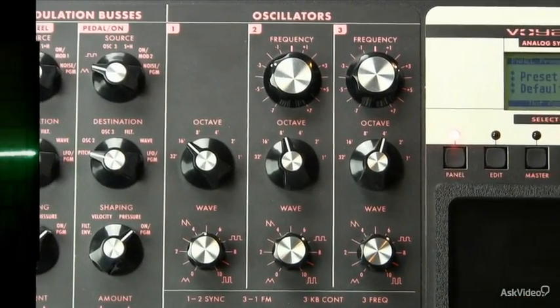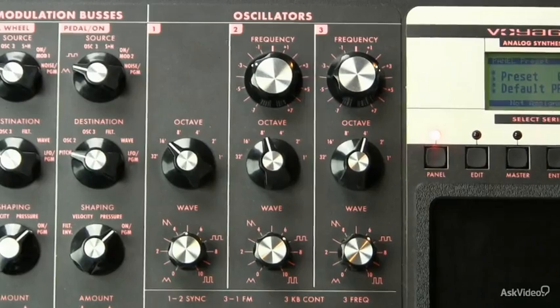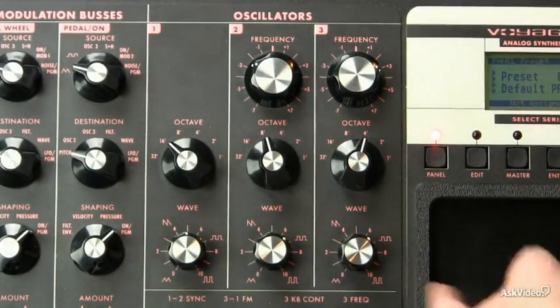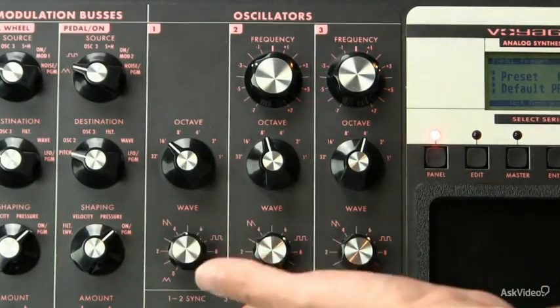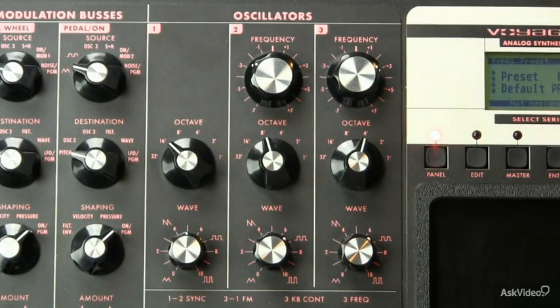So as we can see, there is a vast amount of timbral variance that can be generated when you have a variable wave shape and a synthesizer that not only has variable wave shape, but has multiple oscillators with variable wave shape.